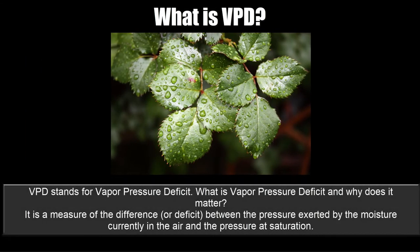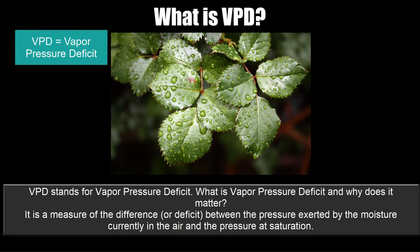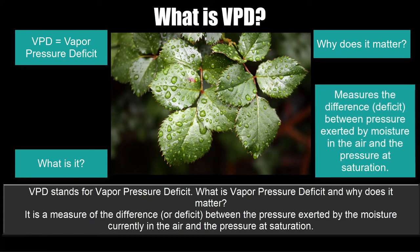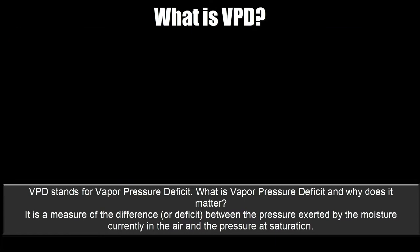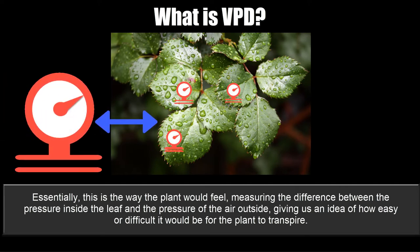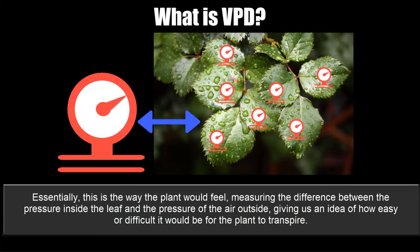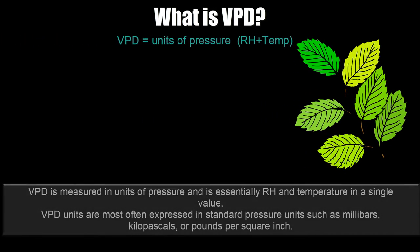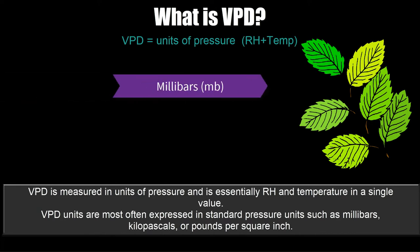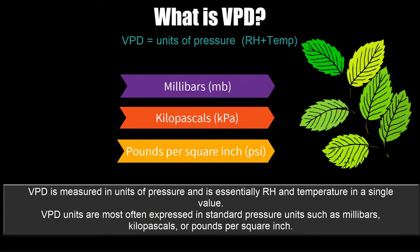What is VPD? VPD stands for vapor pressure deficit. It's a measure of the difference or deficit between the pressure exerted by the moisture currently in the air and the pressure at saturation. Essentially this is the way the plant would feel — measuring the difference between the pressure inside the leaf and the pressure of the air outside — giving us an idea of how easy or difficult it would be for the plant to transpire. VPD is measured in units of pressure and essentially combines RH and temperature into a single value. VPD units are most often expressed in standard pressure units such as millibars, kilopascals, or pounds per square inch.